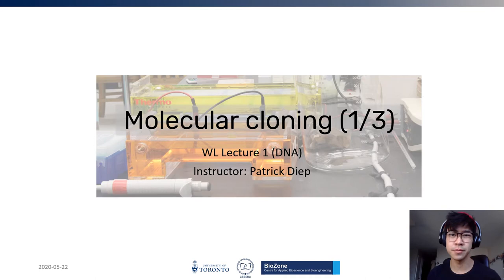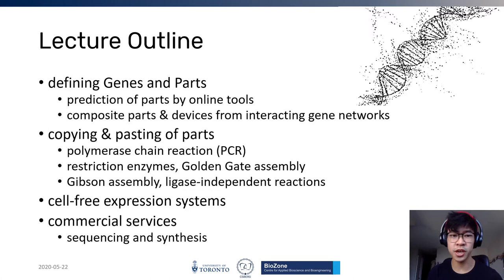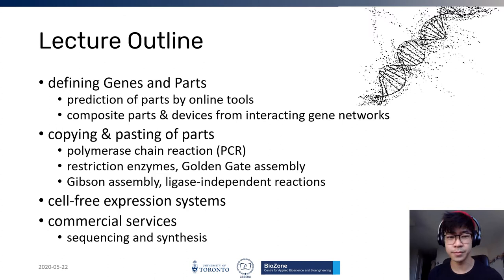Without further ado, let's dive in. This lecture has four parts. In the first part we define what a gene is and what a part is — parts you can predict using online tools. You can put these parts together into composite parts, devices, and systems, or in other words interacting gene networks. In the second section we talk about how to copy and paste these parts using PCR and different assembly methods. In the third section we'll talk about cell-free expression systems, and lastly, section four covers commercial services to support your lab work.